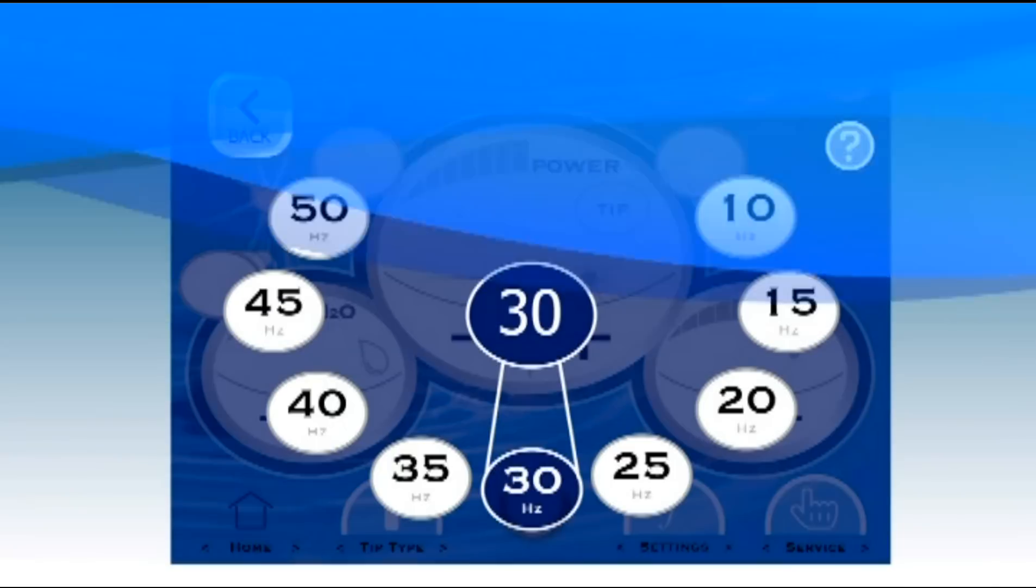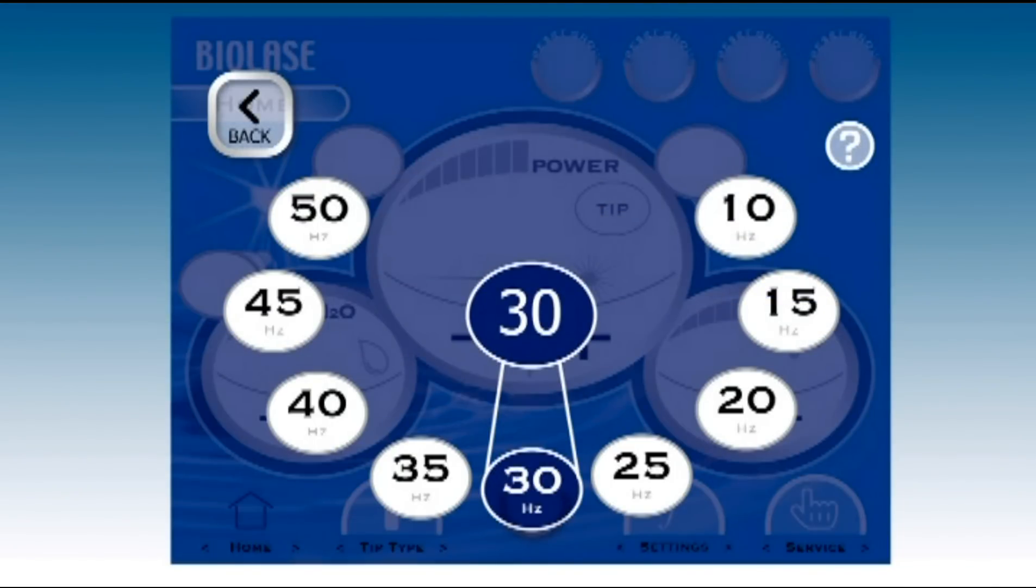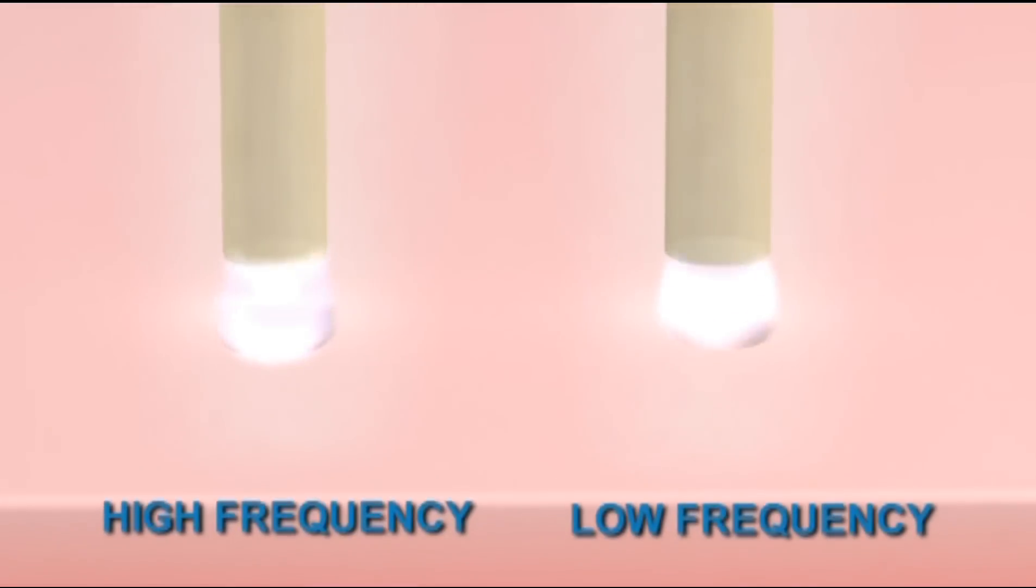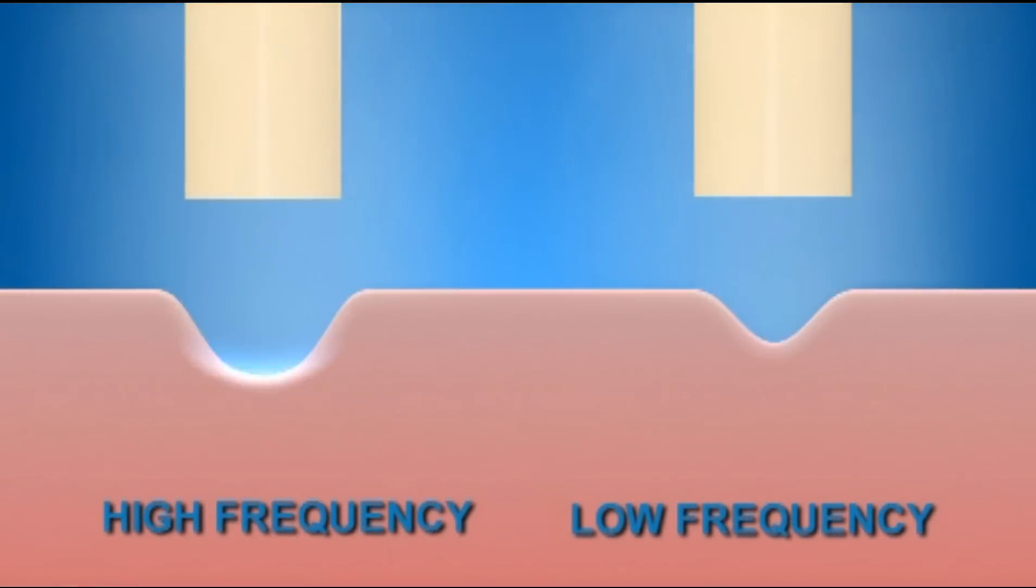Frequency, or the number of laser pulses per second, controls the smoothness and speed of cutting. Higher frequency produces a smoother cut, since there are more cutting pulses for any given length of incision. High frequency also cuts faster. As with power, simply adjust the frequency for the results you want.